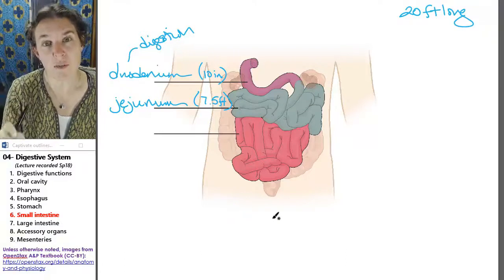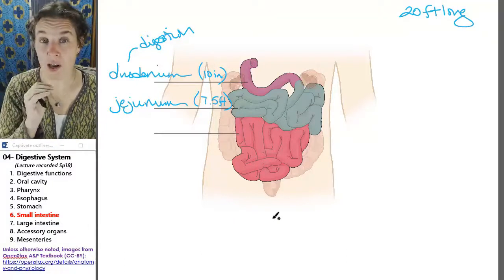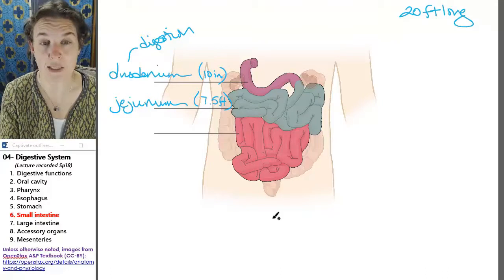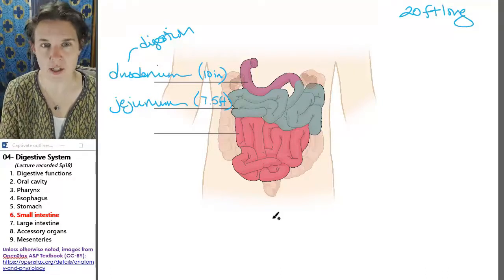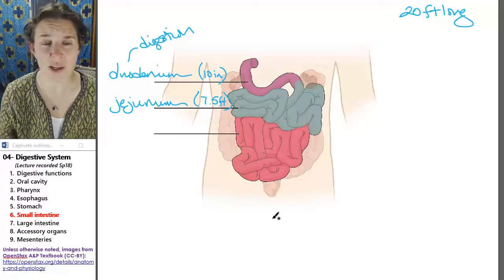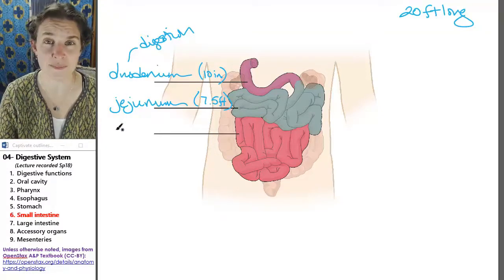I just think it's super interesting to think about them. The jejunum is where absorption happens. So duodenum, we're having secretion and digestion. Jejunum, we're absorbing what we digested.